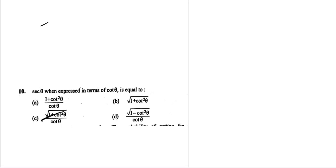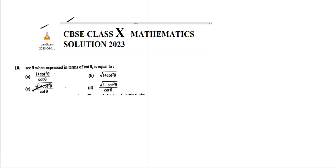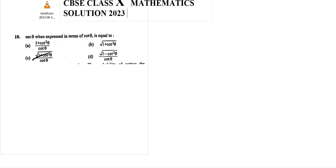Question number 10. Sec square theta is 1 plus tan square theta, 1 plus 1 by cot square theta. We will say so it is 1 plus cot square theta by cot square theta.